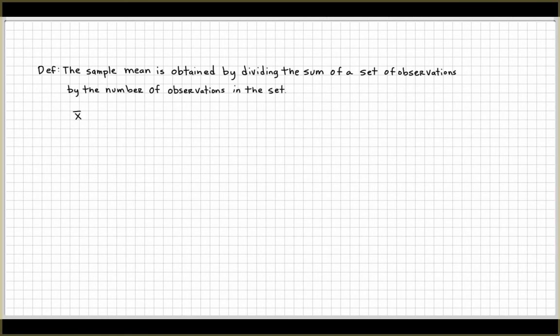So the sample mean is represented by x bar. That's going to be equal to the sum, the capital Greek letter sigma, which means sum. Sum all the data points, x represents the data points or observations, divided by how many observations you have, that's n.